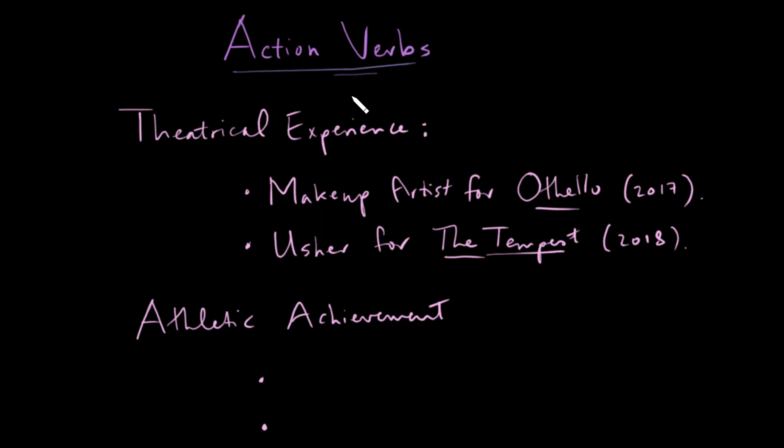Now you don't always have to use action verbs to create parallelism in a list. You can also use other parts of speech. In our first example, just to show the difference here, we've used nouns.